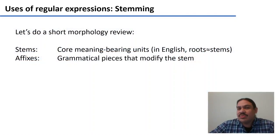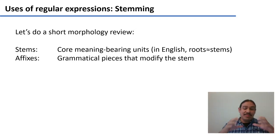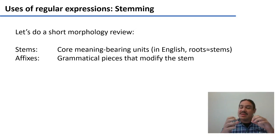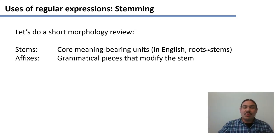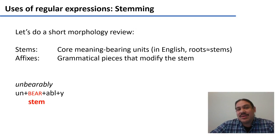Let's do a short review of what stemming is. There's an area of linguistics called morphology, and it studies the parts of words. Words can be separated into their individual components, and we call each of these components a morpheme — a minimal unit of meaning. Morphemes can be of two types: they can be stems, which are the core meaning-bearing units in the word.